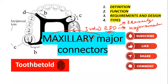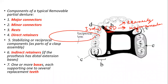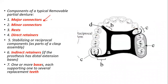For more such videos, you can head to the channel and check out the playlist on prosthodontics. So a quick revision of what we have done: we have already completed the component parts where we had spoken. There are connectors, which can be major and minor, retainers, which can be direct and indirect, and the denture base and artificial teeth.